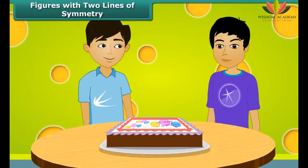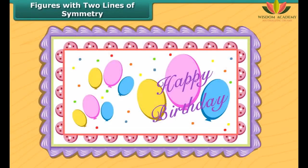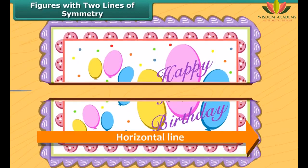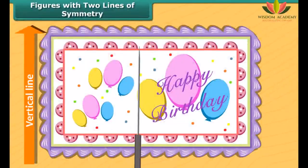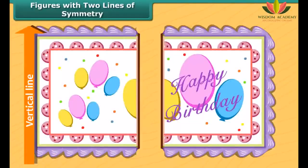Manu and Mrinal have one rectangular cake. Each of them want exact half of it. The cake can be divided in two ways to give equal halves. Do you want to know how? Let us find out.